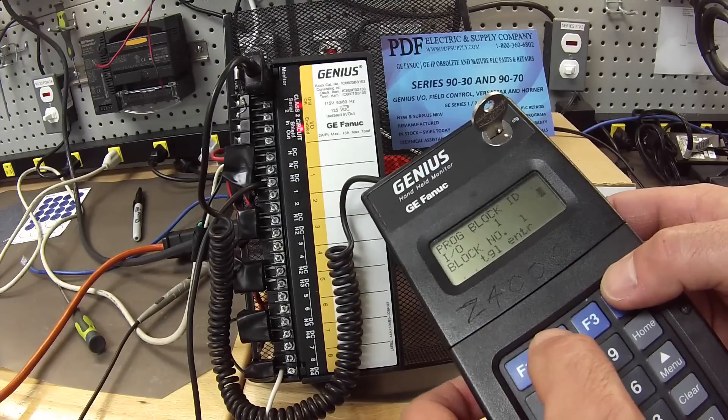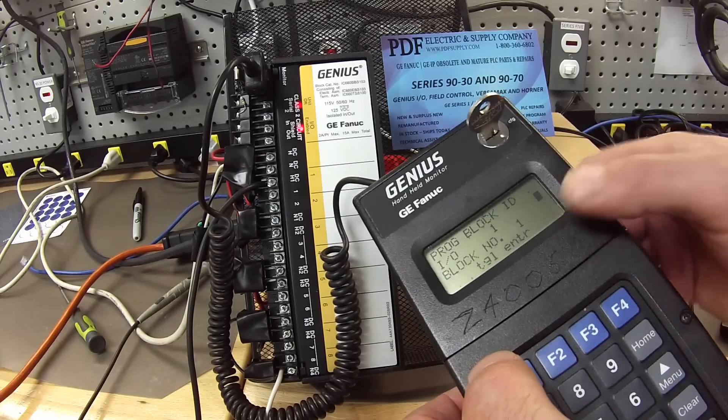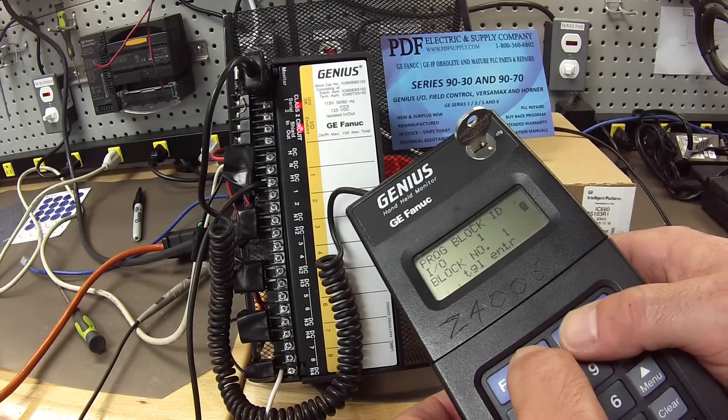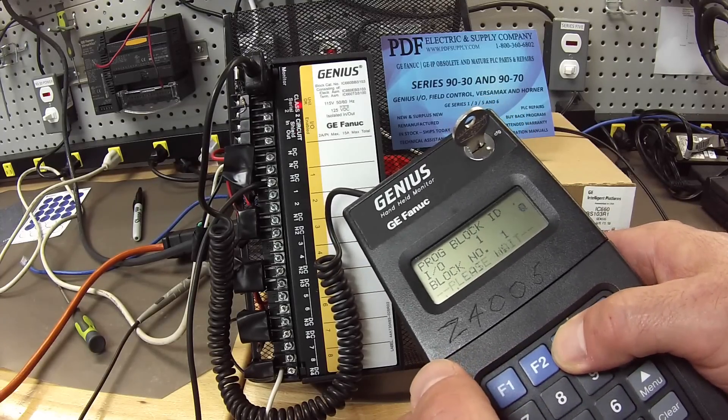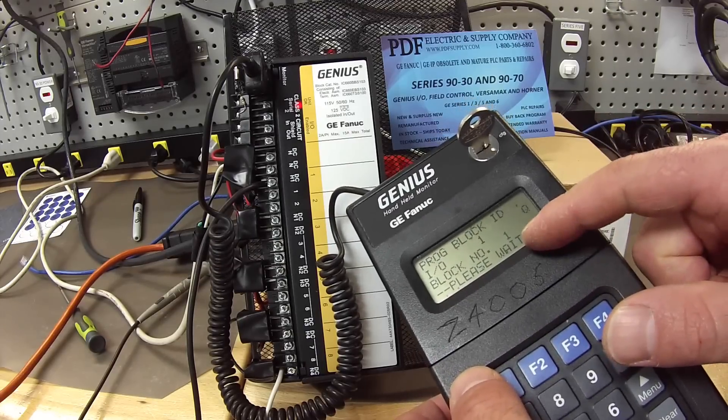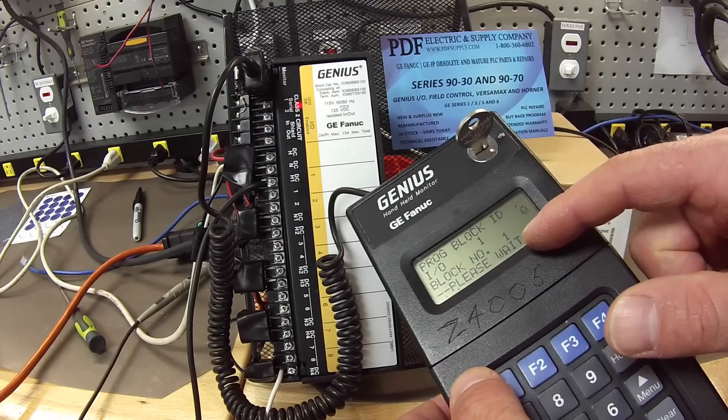Then I'm going to toggle using F2, it'll be a queue that represents output. I'm going to hit F3, which is enter. Now it's configuring the block. Once that's done, we're going to be set up to do output.